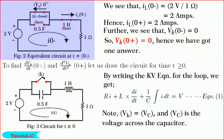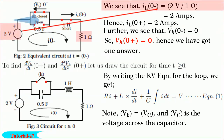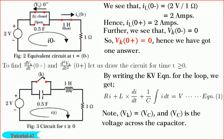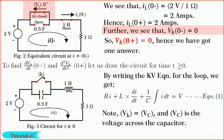Observe the network. We see that il(0-) is equal to 2 volts divided by 1 ohm, which will give us 2 amperes. Hence il(0+) is equal to 2 amperes because inductance opposes the change in current. Further, we see that φk(0-) is equal to 0 as the switch k is across it and it is closed. Hence φk(0+) is equal to 0. Look, we have already got one answer.